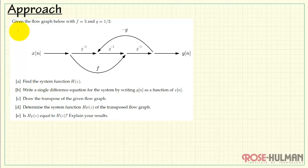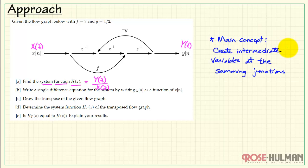Here we are given a flow graph with specific values for the variables f and g. The flow graph translates an input x into an output y. We are looking for the system function h of z, and this is defined as the z-transform of the output divided by the z-transform of the input. Let me begin by labeling the input and the output in the z-domain.